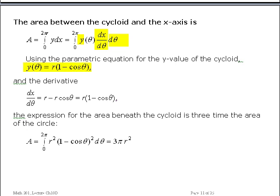We know y. We take that derivative. We ended up with actually exactly the same thing. So here's the expression for the area under the curve. This can be integrated. The answer is 3πr². That is the area beneath the cycloid, where r, again, is the radius of the moving circle.